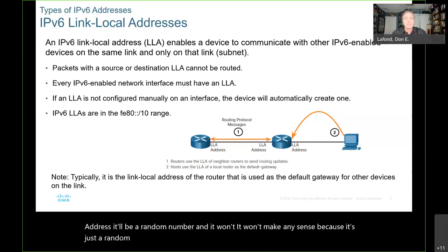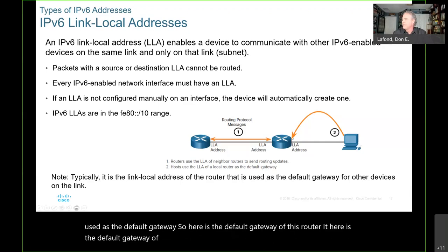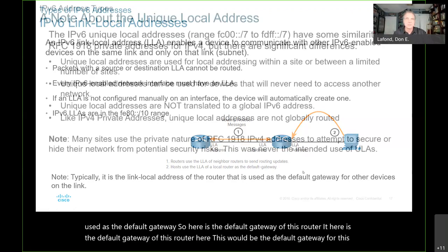Typically, it is the link local address of the router that is used as the default gateway. Here is the default gateway of this router — this would be the default gateway for this host to reach outside the network.